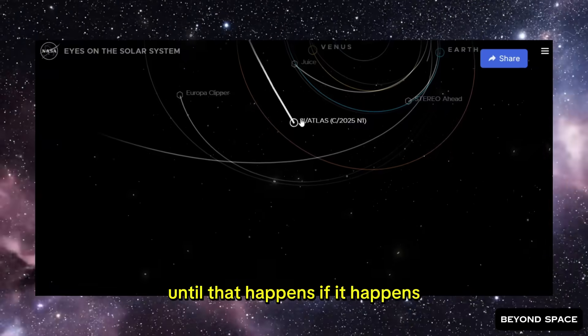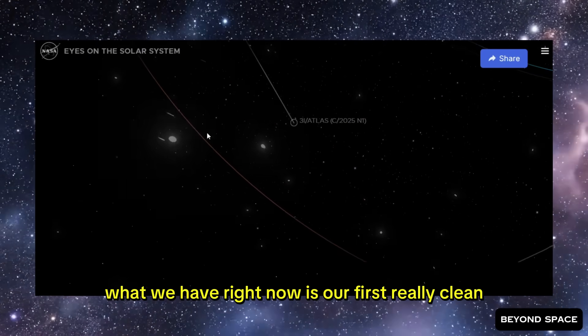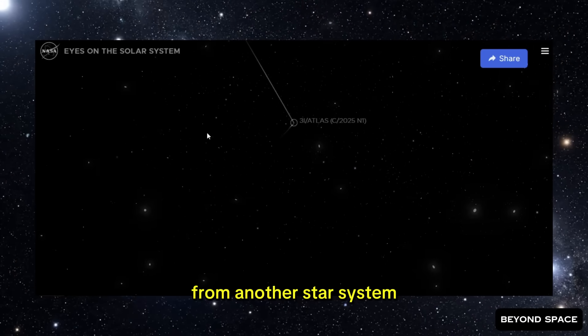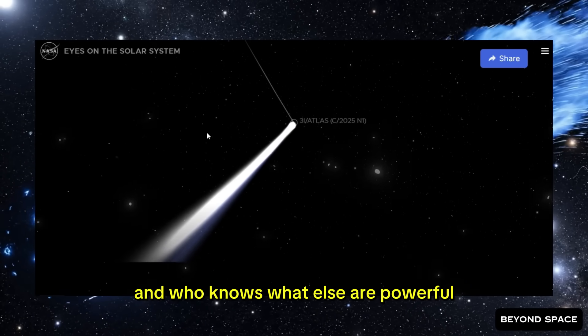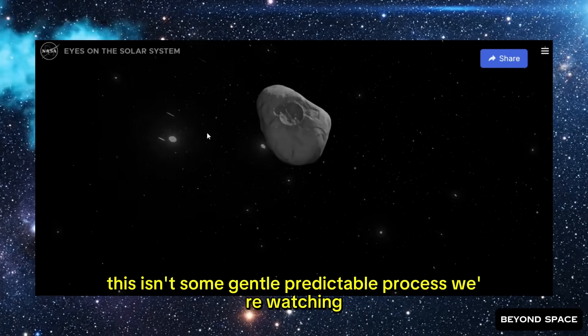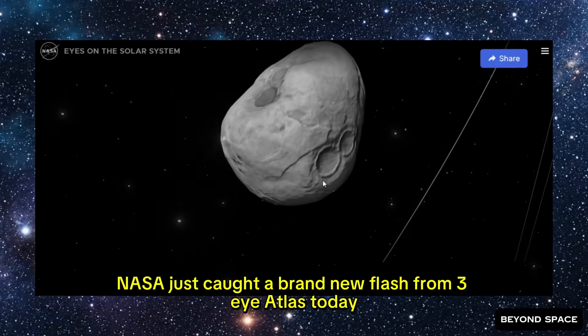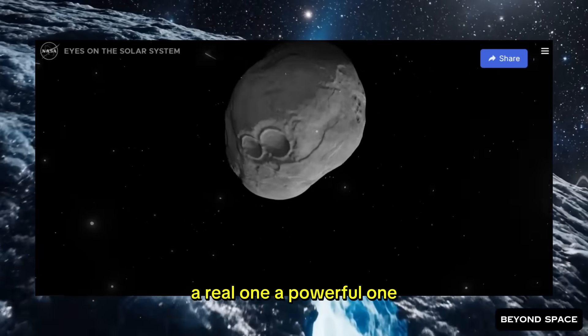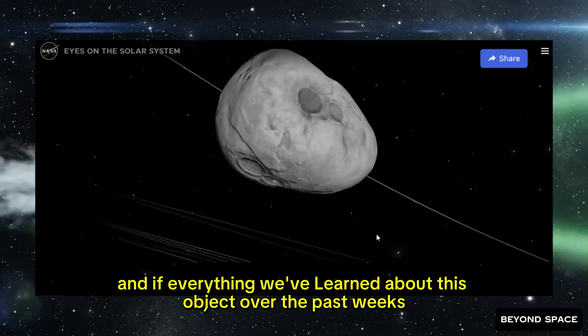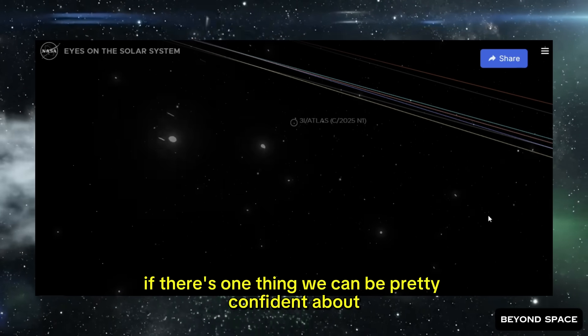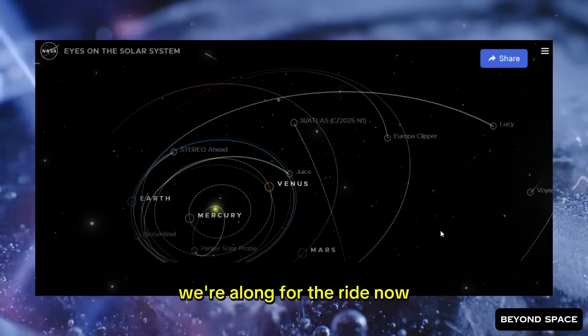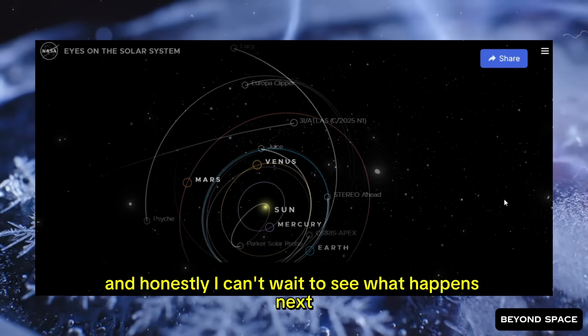Until that happens, if it happens, what we have right now is our first really clean, sharp glimpse of just how violent things can get inside this visitor from another star system. The forces at work inside this ancient ball of ice and rock, and who knows what else, are powerful. The energy releases are sudden and dramatic. This isn't some gentle, predictable process we're watching. NASA just caught a brand new flash from 3i Atlas today. A real one. A powerful one. One that actually moved the comet. And if everything we've learned about this object over the past weeks tells us anything, if there's one thing we can be pretty confident about, it's that this won't be the last surprise this interstellar traveler has in store for us. We're along for the ride now. And honestly, I can't wait to see what happens next.